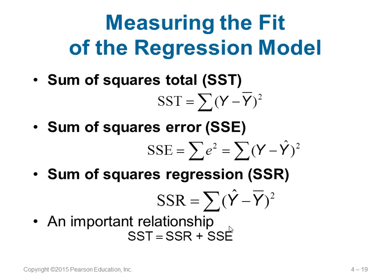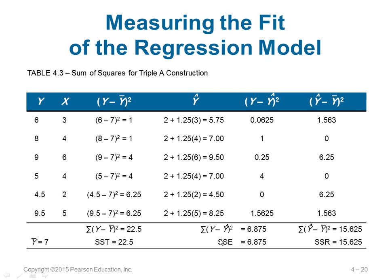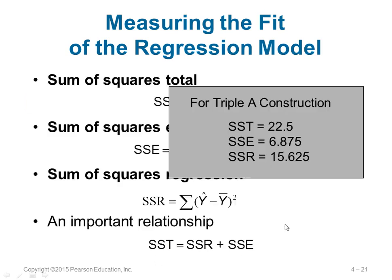SST = Σ(y − ȳ)², where y is the actual value and ȳ is the mean. SSE (sum of squares error) = Σ(y − ŷ)², where y is actual and ŷ is predicted. SSR (sum of squares regression) = Σ(ŷ − ȳ)², the difference between predicted and mean. Basically, SST = SSE + SSR. SST is between y and ȳ, SSE is between y and ŷ, and SSR is between ŷ and ȳ.